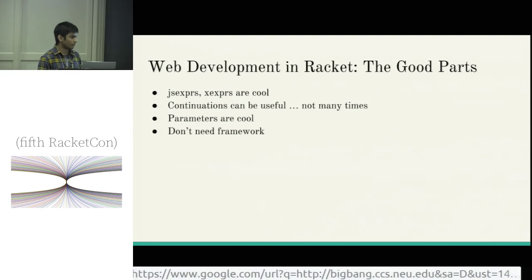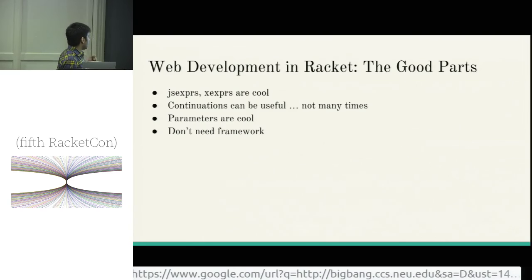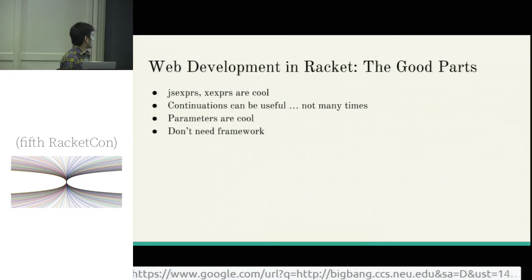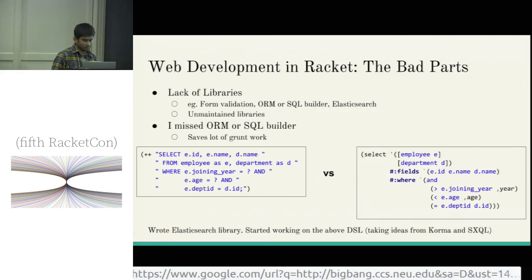Coming to the bad parts, one of the biggest bottlenecks was the lack of libraries. I expected this to be done within a weekend, but there were a bunch of libraries that weren't there, and there was a lot of grunt work I had to do. I particularly missed an ORM because I clearly don't like writing plain SQL - it's code in a string, and every time you have to change something you feel like pulling your hair out. So rather than complaining, I started working on a DSL that would compile to SQL - it's a work in progress. I also built an Elasticsearch library. Clearly, Racket needs more libraries for the web.